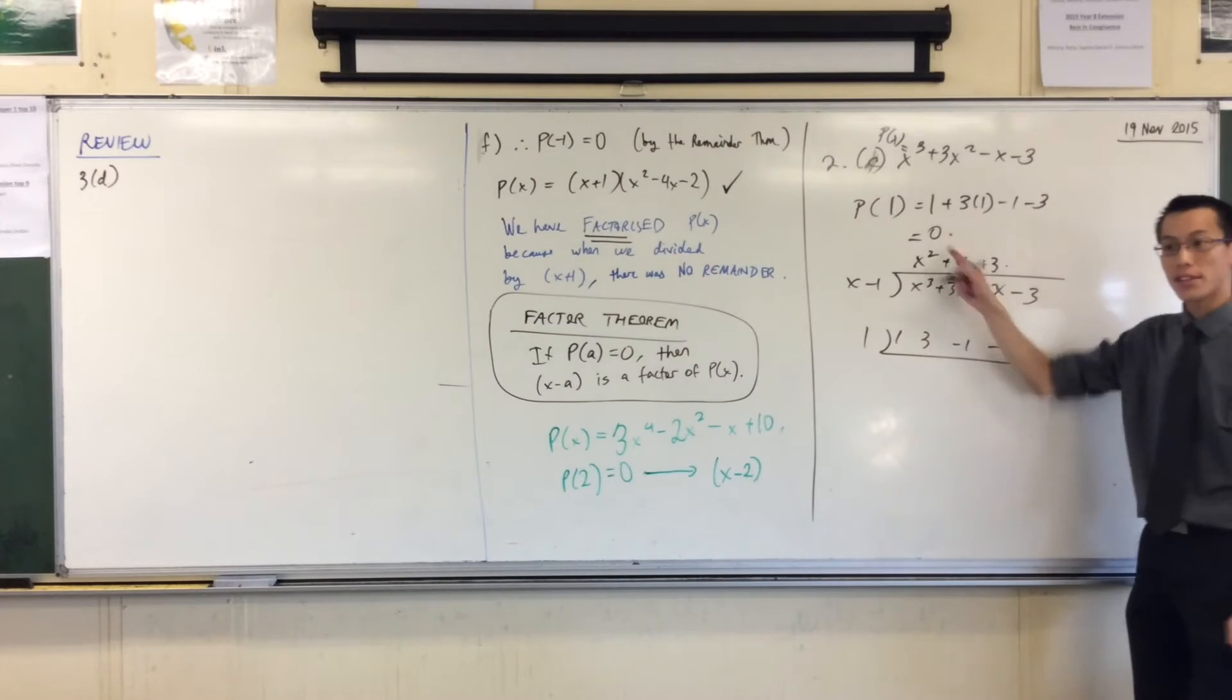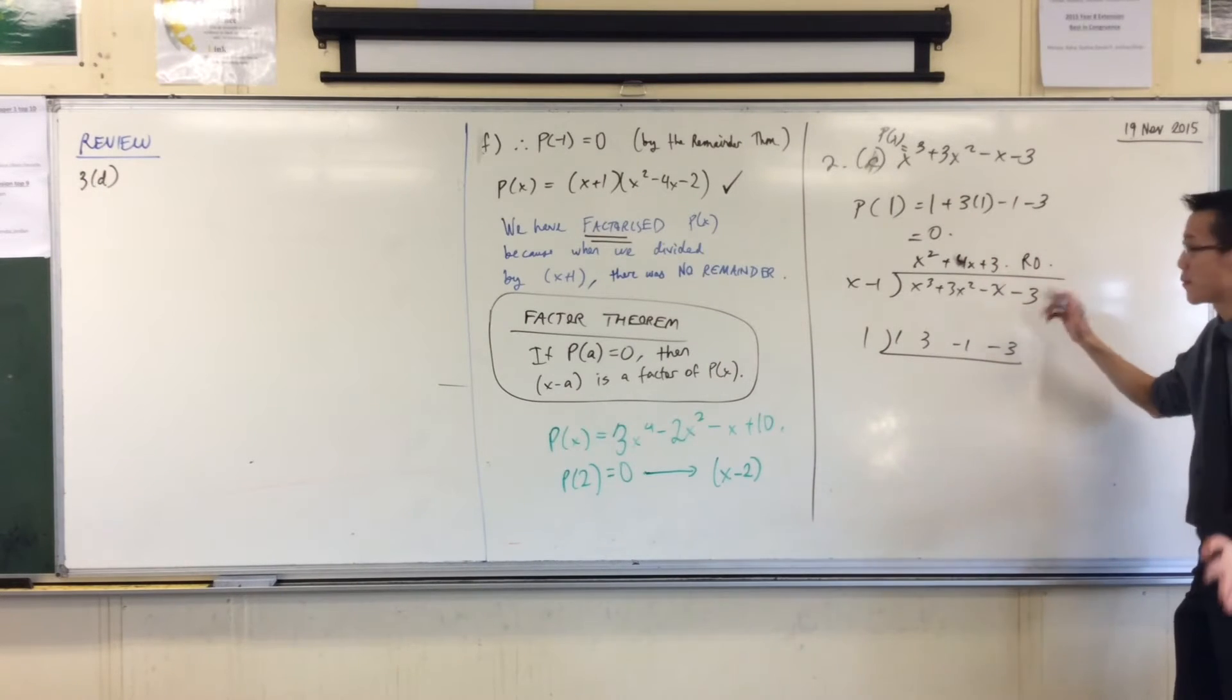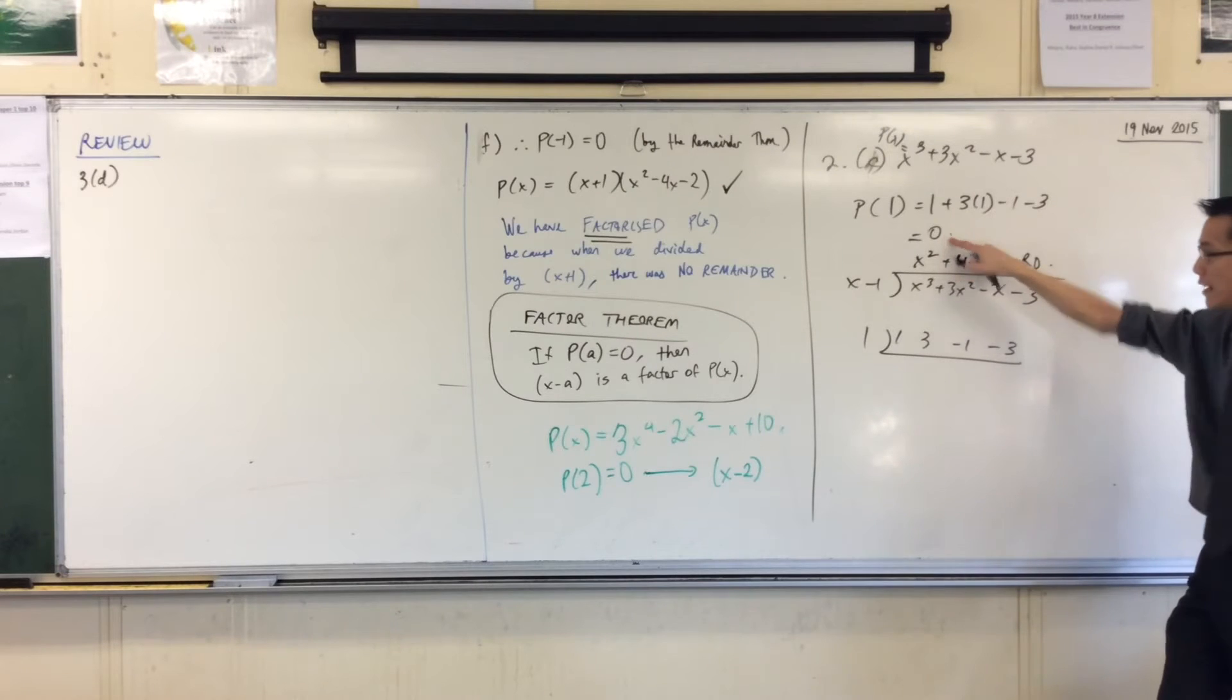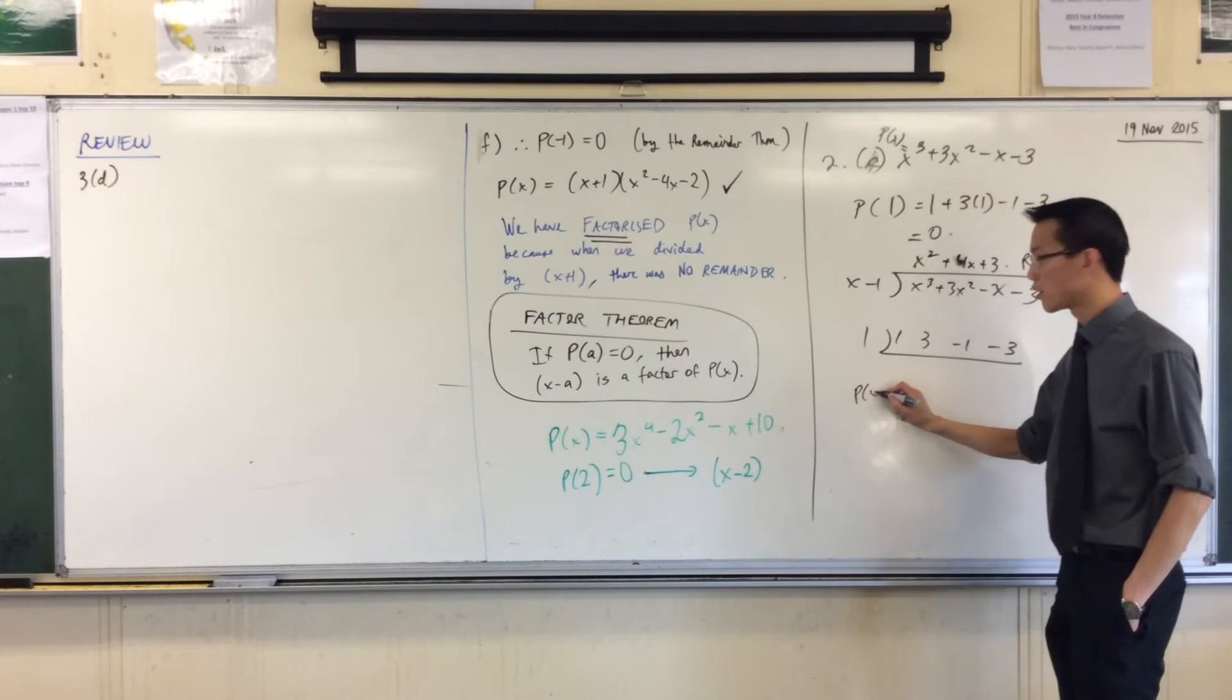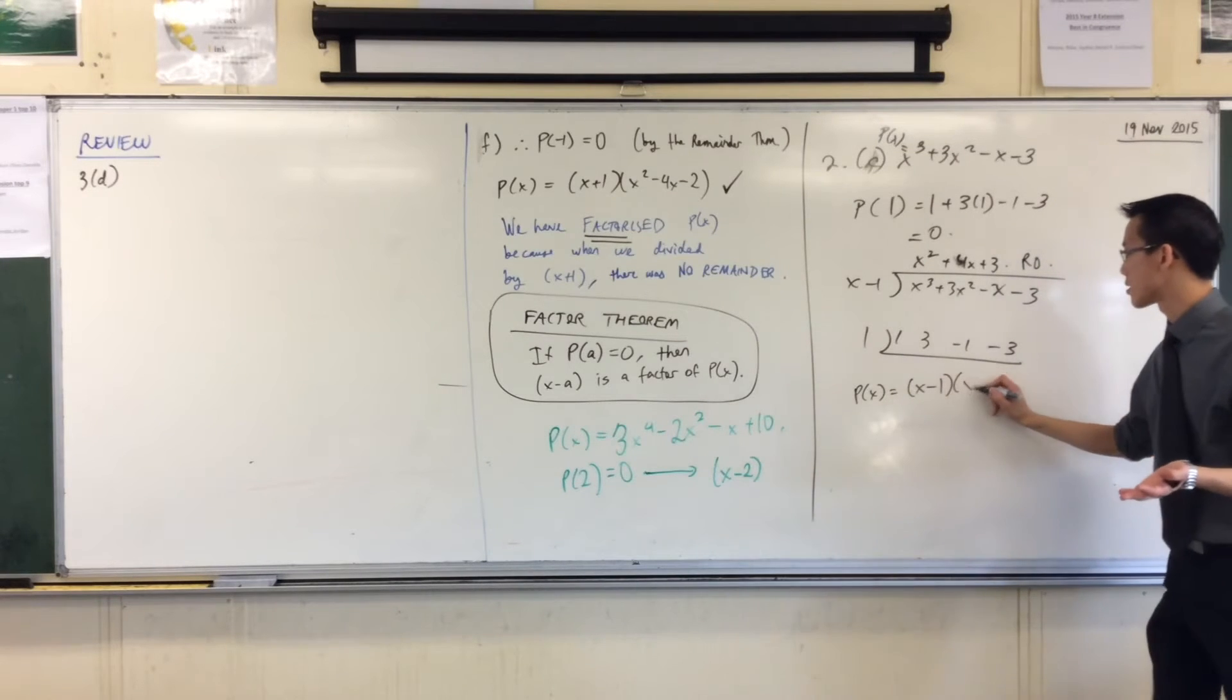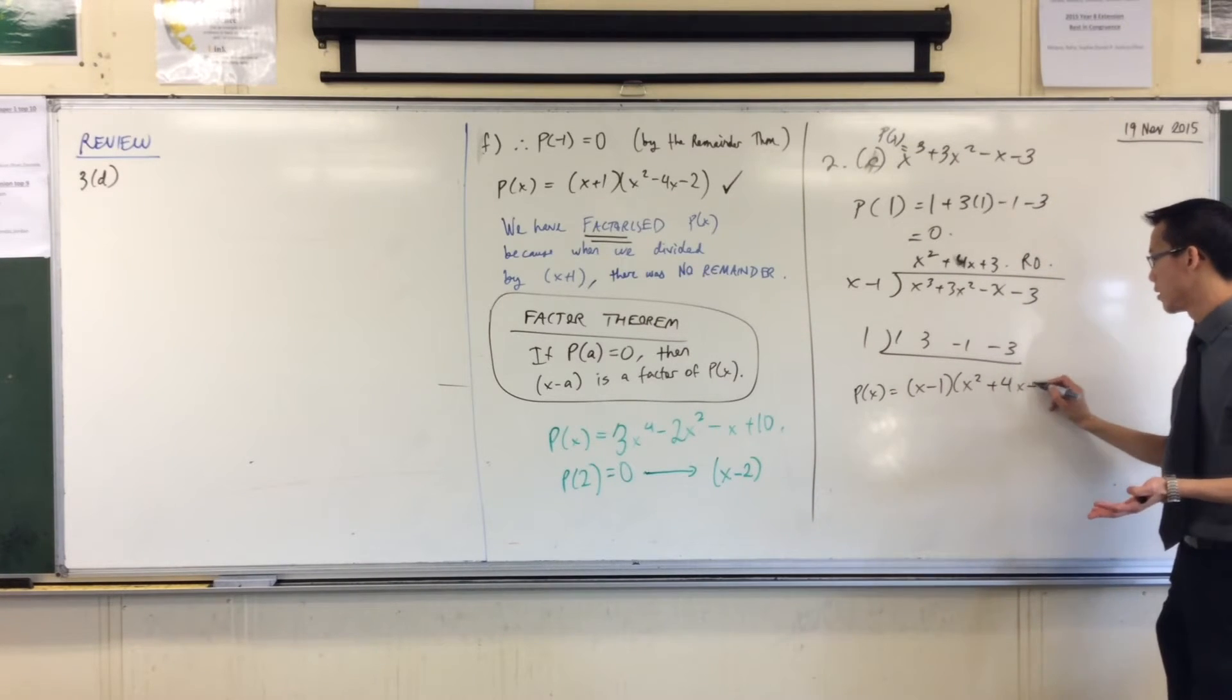So once you've got this, right? And of course we've found there's no remainder. There shouldn't be a remainder because I just showed it was a factor, right? What you can do with this is you can say, alright, my original polynomial, therefore I can factorize like this. Okay?